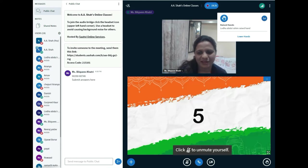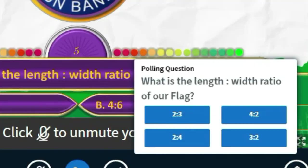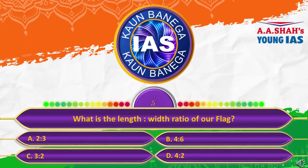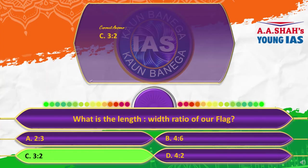The fifth question: What is the length to width ratio of the flag? A, 2:3; B, 4:6; C, 3:2; or D, 4:2. The correct answer is 3:2.